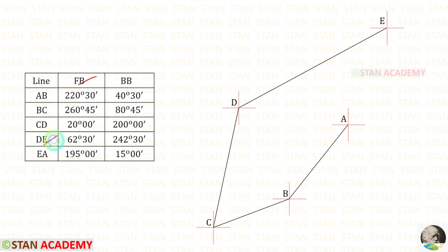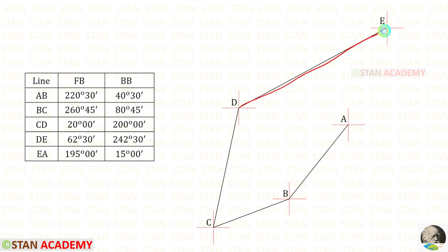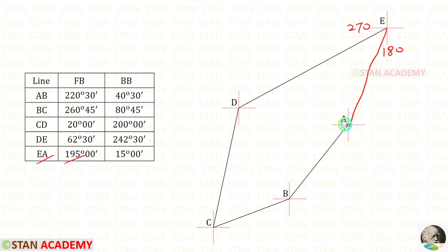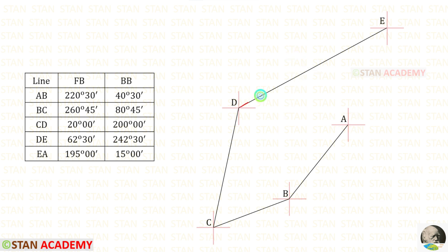The fore bearing of DE is given as 62 degrees 30 minutes. We know that 62 comes between 0 and 90, so in between we have to make a line and then the direction symbol. I have extended this line because if I don't extend, it will not connect with station A. The fore bearing of EA is given as 195 degrees. 195 comes between 190 and 270, so in between we have to make a line and connect with station A. That is why I have extended the line a little further. We have made the closed traverse.